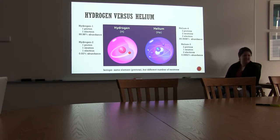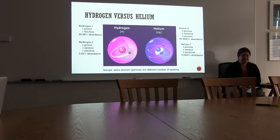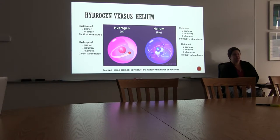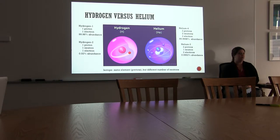So isotopes are the same element — they have the same number of protons, but a different number of neutrons. Protons tell us what element we have. And for a neutral atom, the number of protons equals the number of electrons. So any hydrogen atom will only have one proton and therefore one electron.